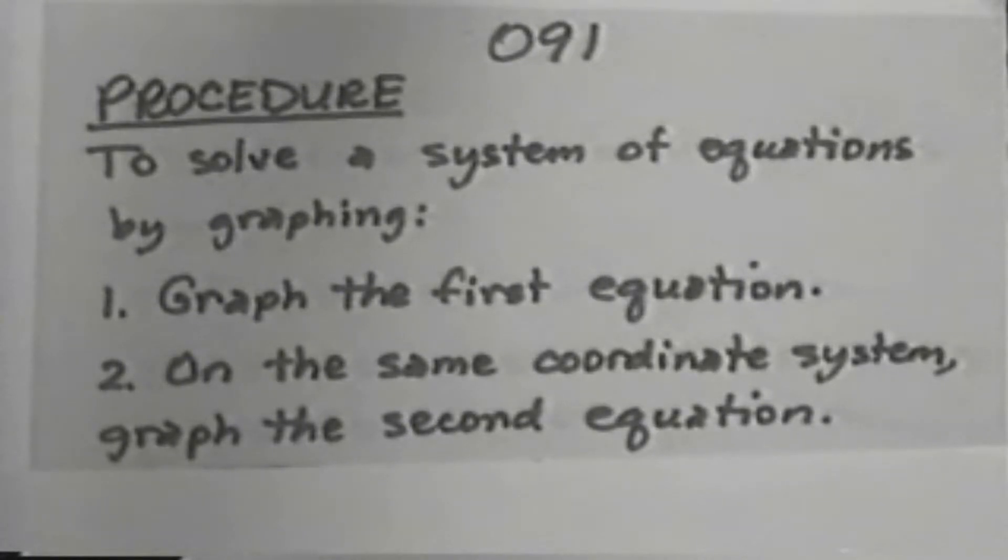On the same coordinate system, graph the second equation. This means the second graph will be drawn right on top of the first graph, on the same coordinate system.